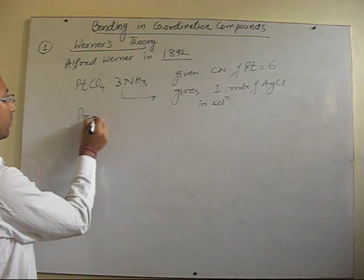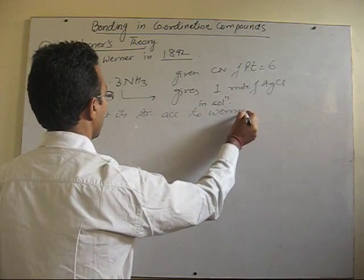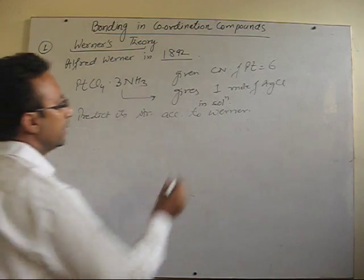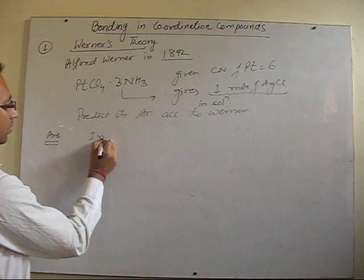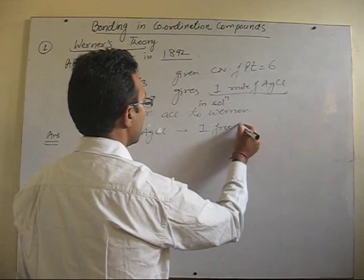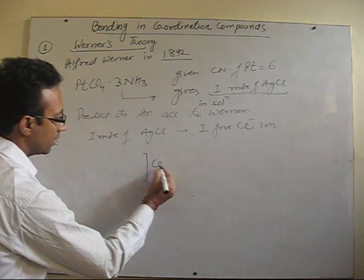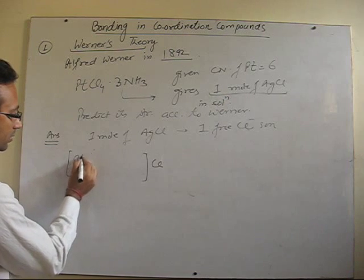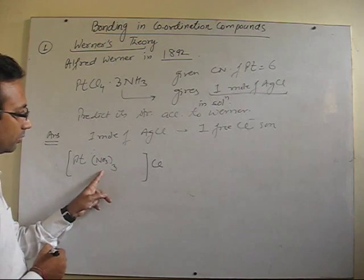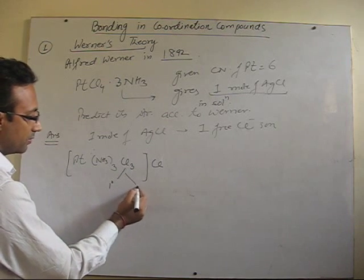It is given that this particular complex gives one mole of AgCl in solution. The question is to predict its structure according to Werner. One mole of AgCl means one free Cl⁻ ion. So that means outside the coordination sphere there will be one Cl. The central metal atom is platinum. All three neutral ammonia molecules satisfy the secondary equivalency. The total coordination number is six, therefore the other three Cl will be inside.